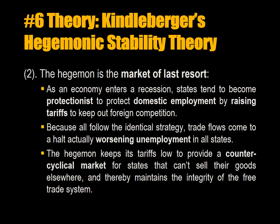The hegemon is also the market of last resort. As an economy enters a recession, states tend to become protectionist, raising tariffs to keep out foreign competition. Because all follow the identical strategy, trade flows come to a halt, actually worsening unemployment in all states. The hegemon keeps its tariffs low to provide a counter-cyclical market for states that can't sell their goods elsewhere, thereby maintaining the integrity of the free trade system. But of course it's politically difficult because the British workers lose their jobs — so it can only be done by a wealthy hegemon. This is what the English did in 1870.